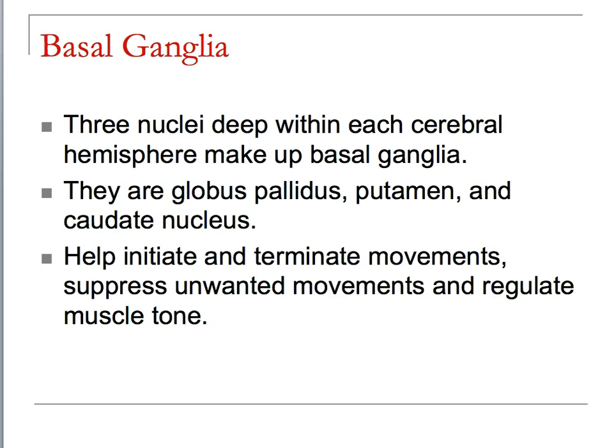Once we've made it through the white matter — the commissural tracts, association tracts, and projection tracts — the next major structure we want to look at inside the human brain is the basal ganglia. These are made up of three nuclei, deep within the cerebral hemispheres: the globus pallidus, putamen, and caudate nucleus.